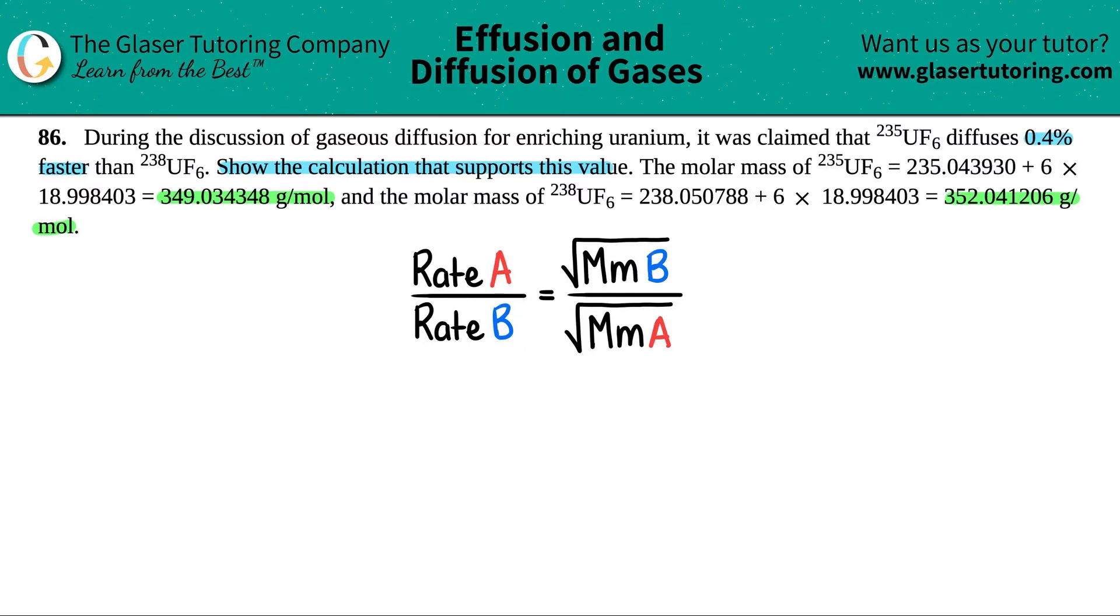Now, since they said that 235UF6 diffuses 0.4% faster than 238, this number should basically be in a numerator. If I wanted to express this as a ratio, I would put 0.4 divided by one. So since we're talking about this diffusing 0.4% faster, I'm going to put this one as the numerator, A, and the 238 as the bottom B for the rate. When we're talking about what's going faster or slower, that's the rate portion here.